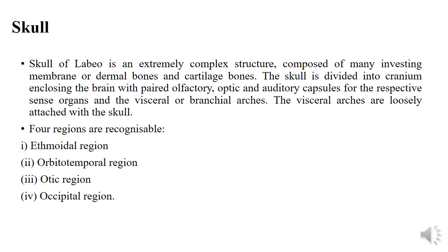The skull of Labeo rohita is an extremely complex structure which is composed of many membrane bones, dermal bones, and cartilage bones. The skull is divided into the cranium. The cranium is a part of the skull which includes the brain and is paired with the olfactory, optic, and auditory capsules, and the visceral or branchial arches.